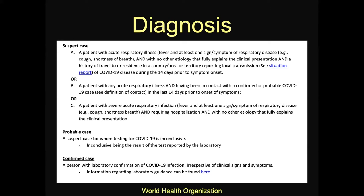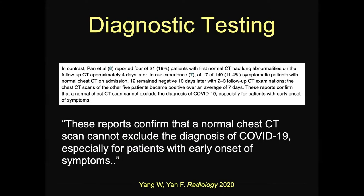With even rapid tests coming online in some places already — hopefully more widespread in the coming days and weeks — we can get a five-minute or 15-minute turnaround as opposed to four hours or even longer. This is from a paper in Radiology published back in February. These reports confirm that a normal chest CT scan cannot exclude the diagnosis of COVID-19, especially for patients with early onset symptoms. Depending on when you scan, it's going to have a lot of impact on what the imaging looks like.